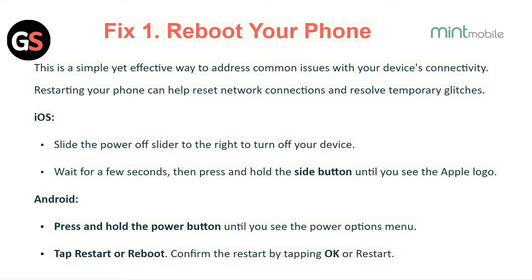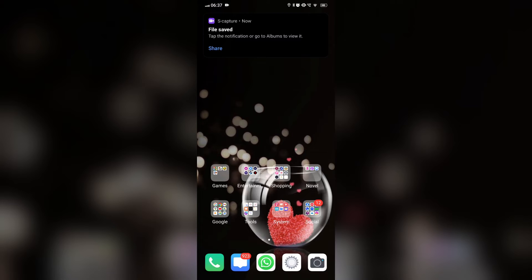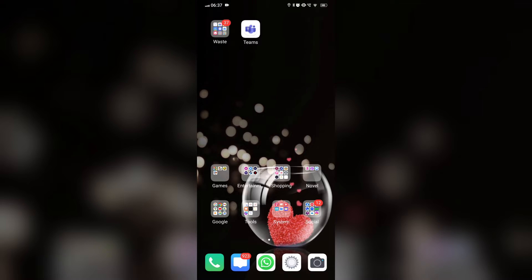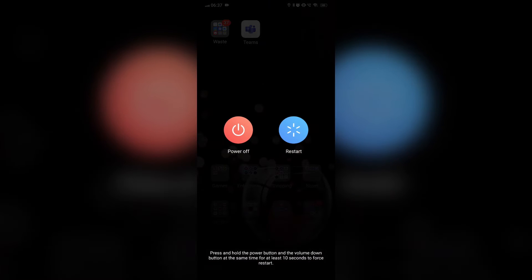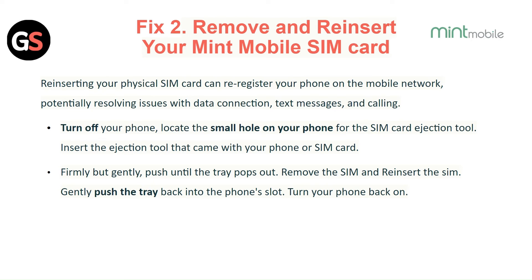For iOS, slide the power off slider to the right to turn off your device. Wait a few seconds, then press and hold the side button until you see the Apple logo. For Android, press and hold the power button until you see the power options menu. Tap Restart or Reboot and confirm by tapping OK or Restart.